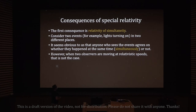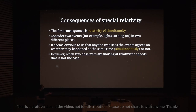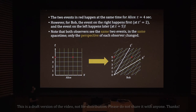It seems obvious that anyone who sees the two lights turn on agrees on whether they happened at the same time — simultaneously or not. However, when two observers are moving at relativistic speeds, that is not the case. They will not agree on whether the two events happen simultaneously. I'm not just going to claim this — I'm going to actually prove it.